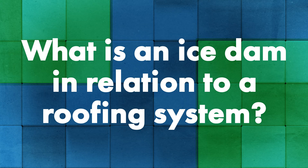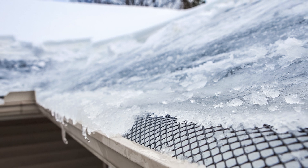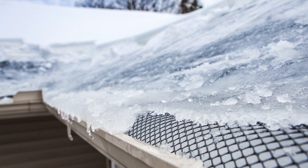An ice dam is where water can no longer drain off the roof. There are a lot of different situations where that can occur. I would say 80% of the time it's a gutter situation where the gutter has frozen up. During cycles of freeze-thaw, the thawed water runs into the ice and just keeps building up — freeze-thaw, freeze-thaw. It keeps building up. The downspout could be iced up, which won't allow the gutter to drain.